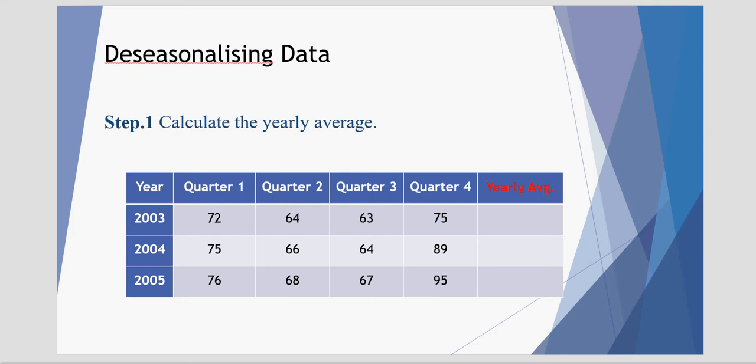For each of the quarters in 2003, we add them together, divide by 4, and we get a yearly average of 68.5. The same for 2004, add up 4 quarters, divide by 4, and we get a yearly average of 73.5.